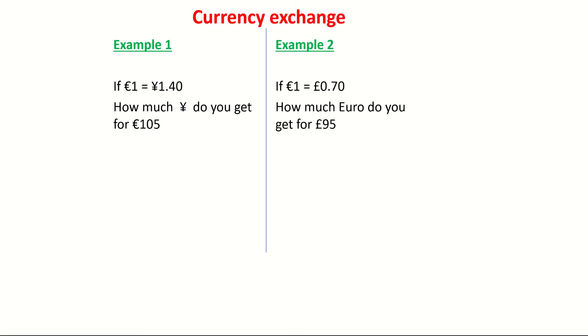So looking at the first one here, they're telling us that 1 euro is the same value of 1.40 yen. So for 1 euro, you can basically get 1.40 yen. So 2 euro would get you 2.80 yen. The question here is asking us, how much yen do we get for 105 euro?